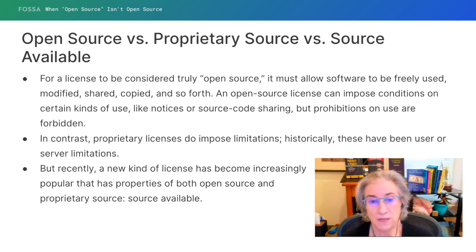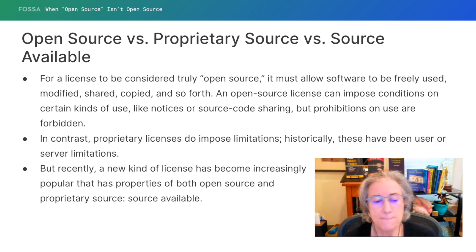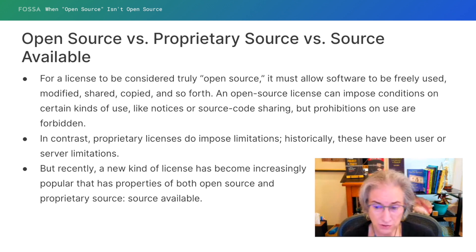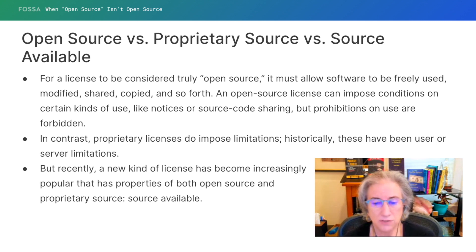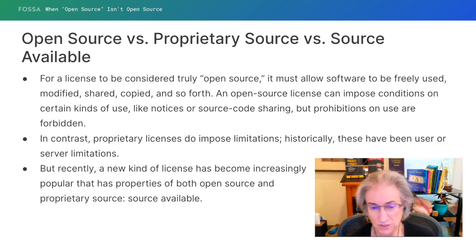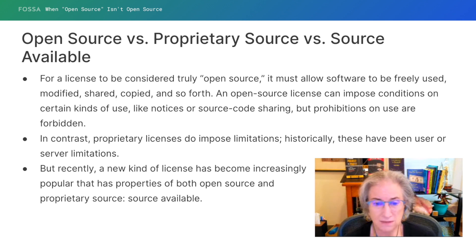Recently we've seen a very strong tendency for companies who are releasing software to instead move into a new category called 'source available.' There's no real definition of source available — it's just what people call this category — and it's become extremely popular in the last five years or so. It's a new kind of license that makes source code available but imposes some license restrictions. It's deployed like an open source license, and people might mistakenly refer to it as an open source license, but it's really not the same thing because it has a license restriction.